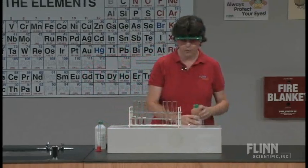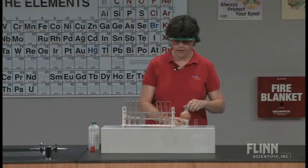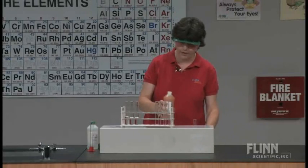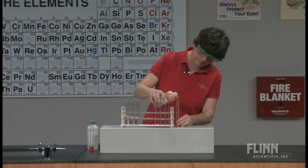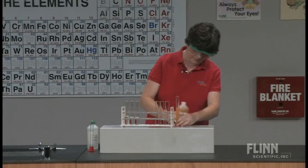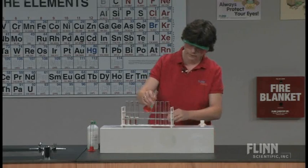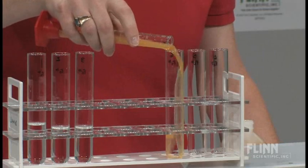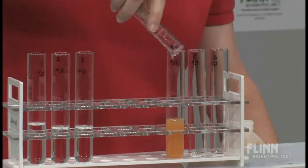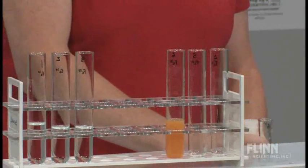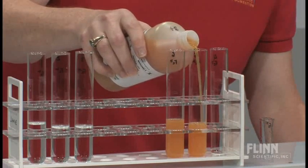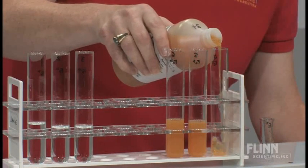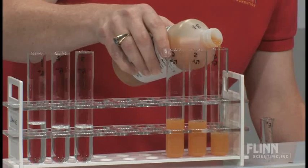On the other side I'm going to put iron three plus, or iron three sulfate, ferric sulfate, and I'm going to put about the same amount in there. And we can see that the iron three ions make kind of that rusty colored solution. Okay, we can talk about the two different oxidation states of the iron.